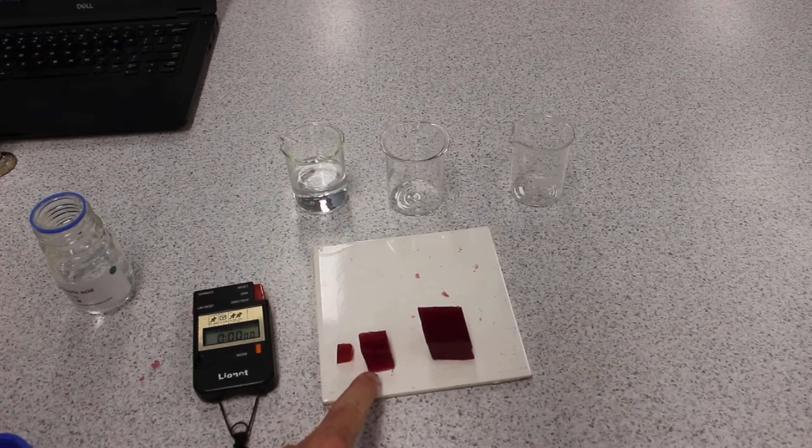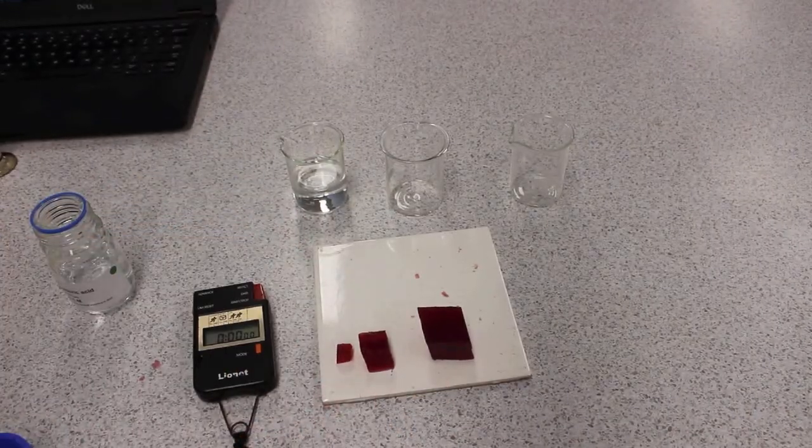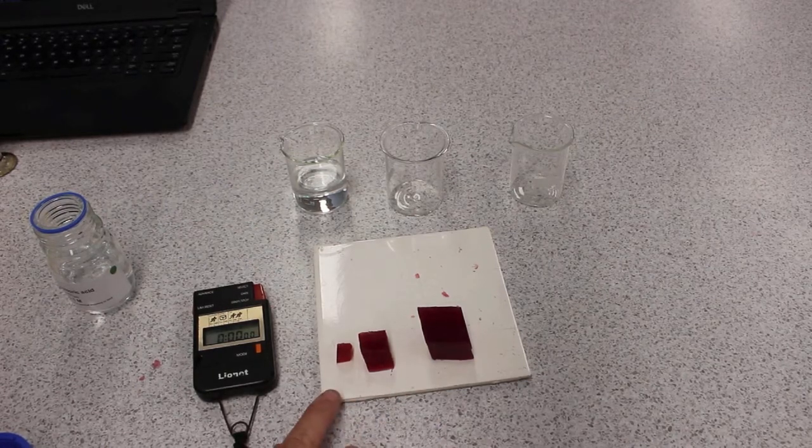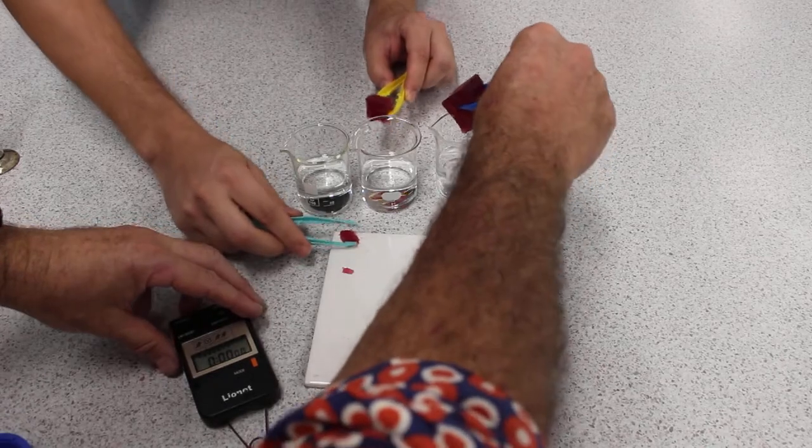We've got three cubes: 10 millimeters by 10 by 10, 20 by 20 by 20, and 30 by 30 by 30. We're going to submerge those in 0.1 mol hydrochloric acid and we're going to time it.